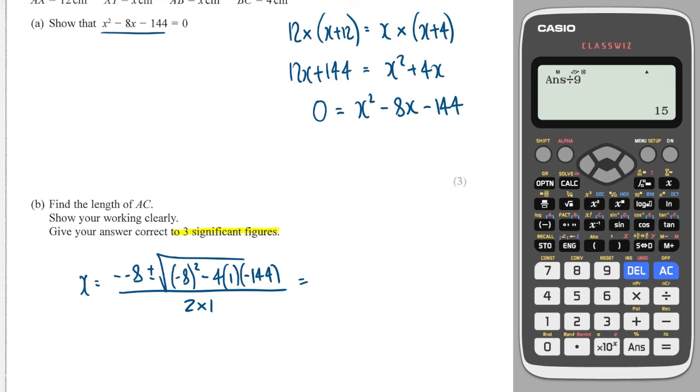So this will give me, when I type into my calculator, fraction button, we'll do minus minus is a plus, and then we'll do plus the square root of 8 squared is 64, minus 4 times 1 times minus 144, all over 2. And we're going to get 16.6, and the negative one will give me a negative answer, so this is definitely the one which we're going to use.